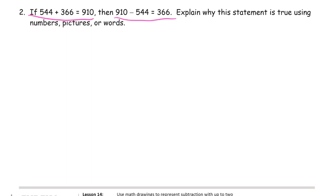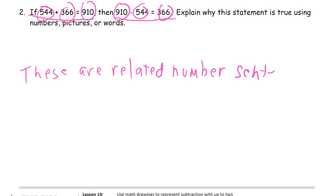910. And if I was going to make a number bond out of this, you can see that this is the whole. So this is the whole. And we have 2 parts. Part, part. And 544 is one of the parts, and 366 is the other part.